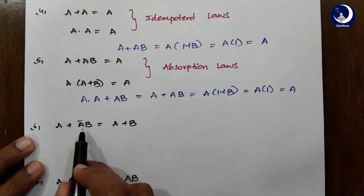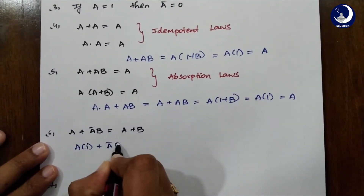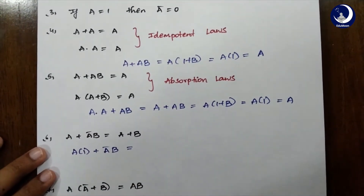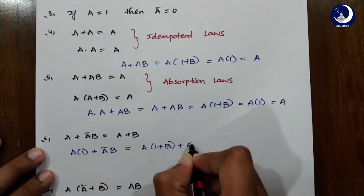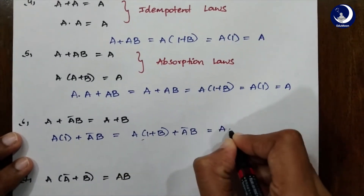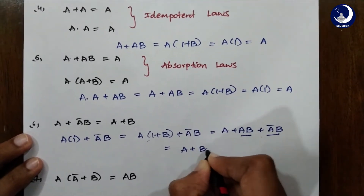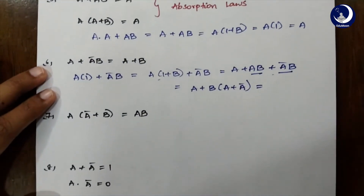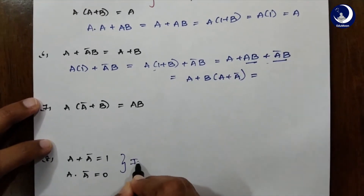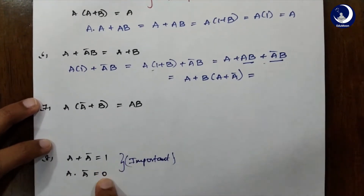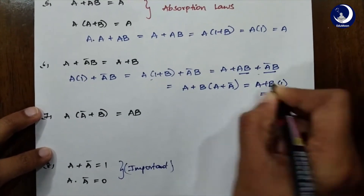Now consider A + ĀB = A+B. How do we solve this? We write A as A·1. Then we substitute 1 as (1+B), giving A·(1+B) + ĀB, which expands to A + AB + ĀB. From the last two terms we can take B as common: A + B·(A+Ā). Now A+Ā=1, so we get A + B·1, which equals A+B. That's the result.